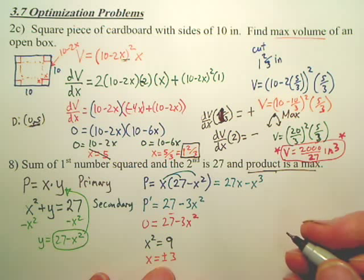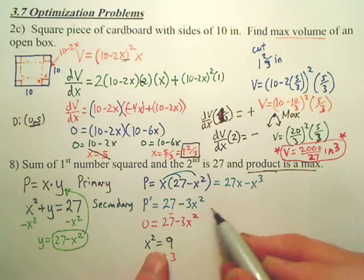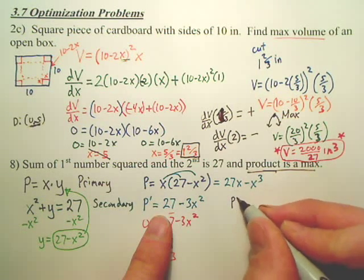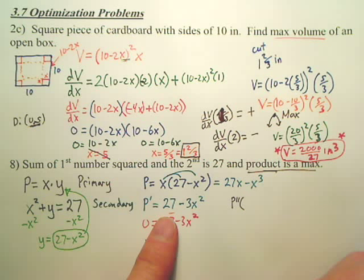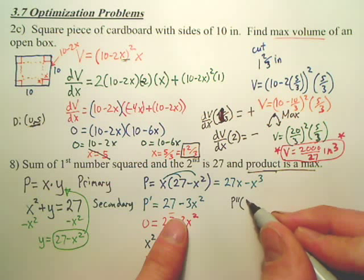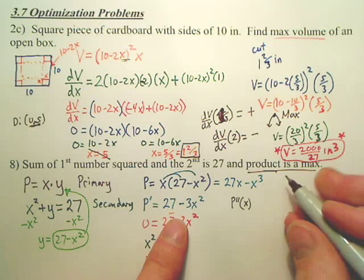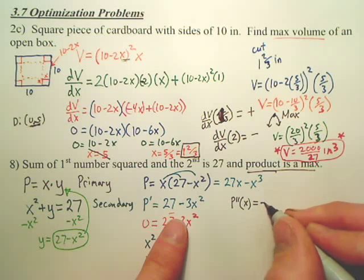But how do we make sure that these are maxes and not mins? Would it be pretty easy to take the second derivative in this situation? Instead of making intervals, would it be easier just to do that second derivative? I think so. Wouldn't the second derivative of... I don't need the x. I just did for some dumb reason. Wouldn't that be negative 6x?